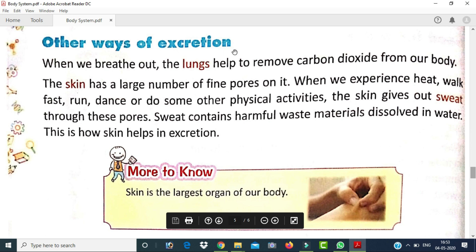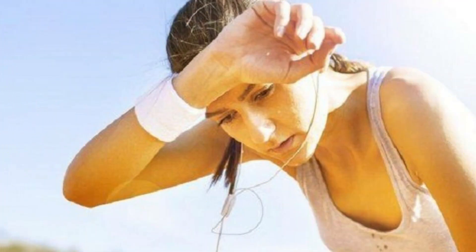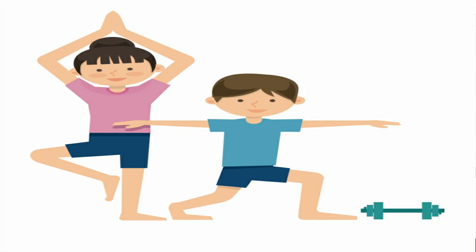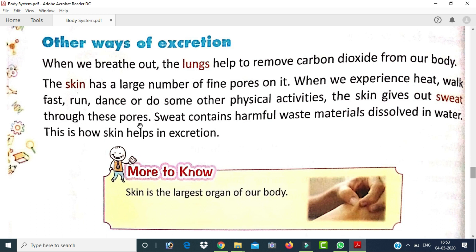There are other ways of excretion as well. When we breathe out, the lungs help remove carbon dioxide from the body. The skin has a large number of fine pores. When we experience heat, walk fast, run, dance, or do physical activity, the skin gives out sweat through these pores. Sweat contains harmful waste material dissolved in water — this is how the skin helps in excretion.